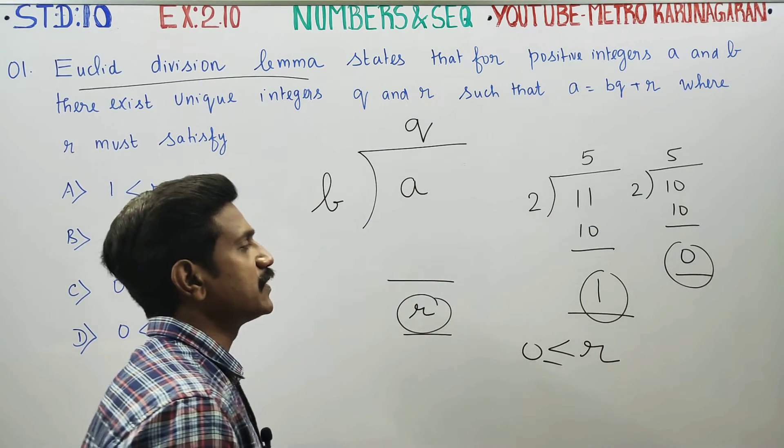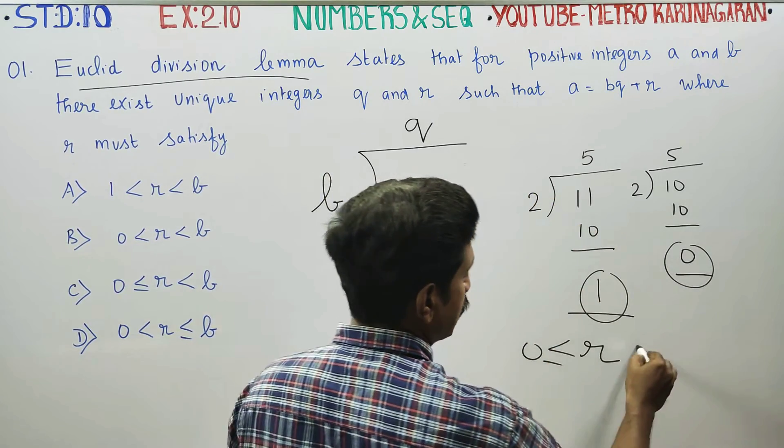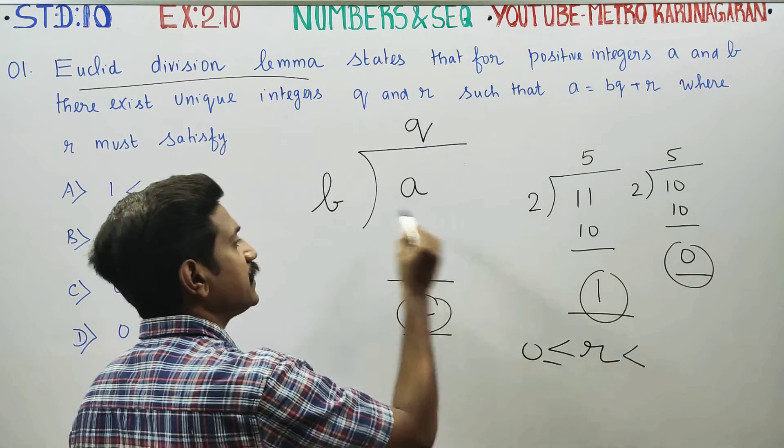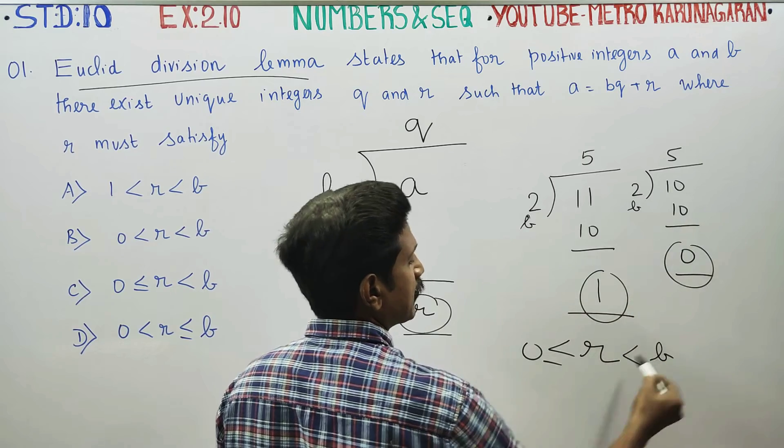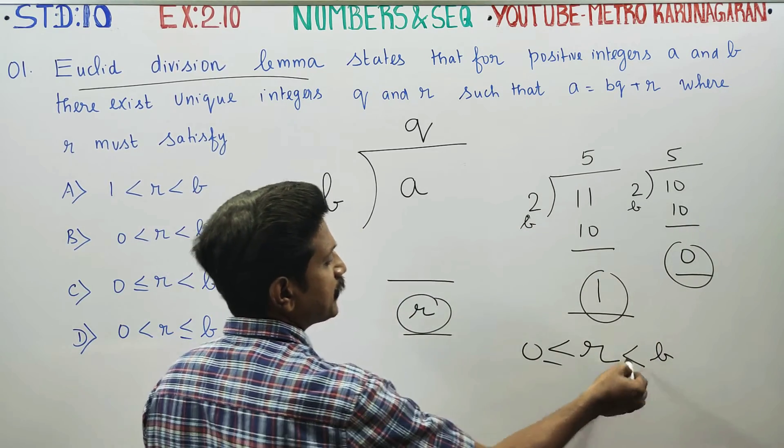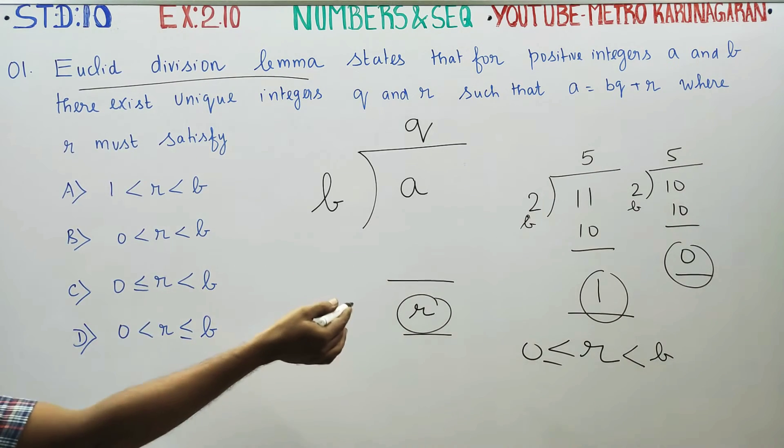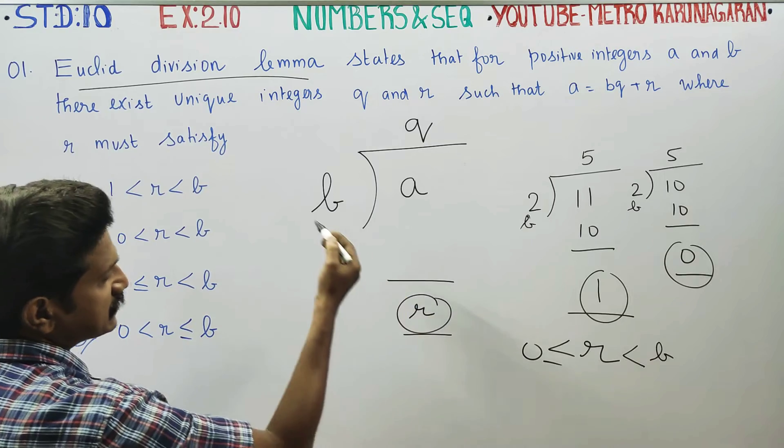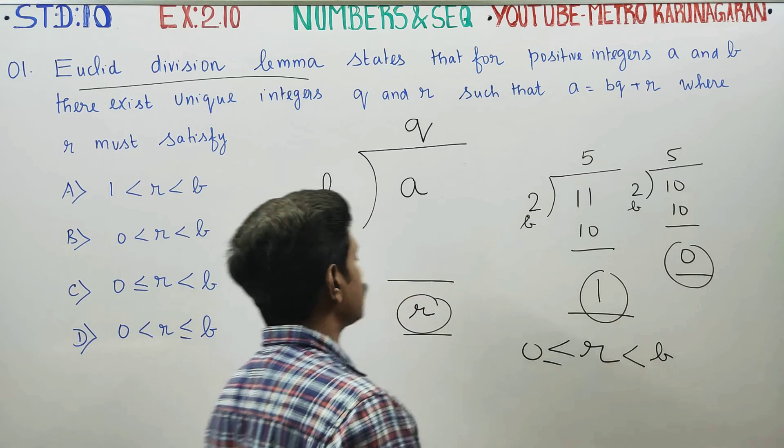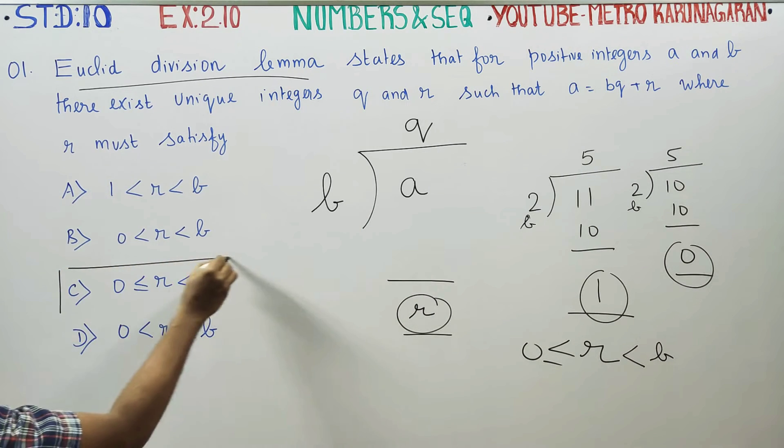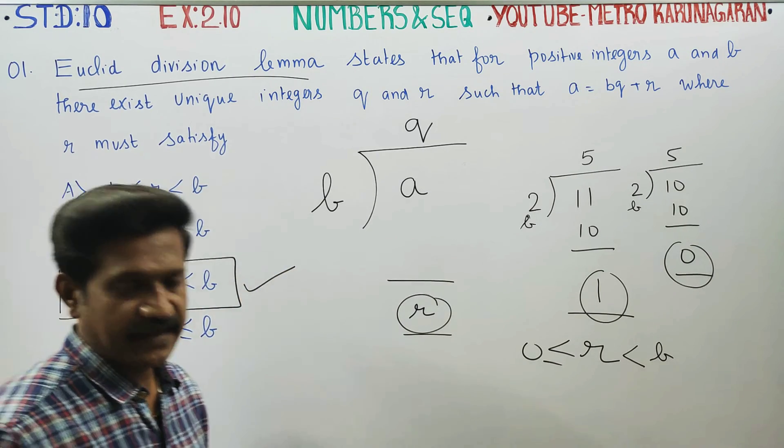The remainder is equal to R, and the divisor is B. The remainder can equal 0, or it will be less than B. If you look at this, you have the C option. Therefore, your answer will be 0 less than or equal to R less than B is your exact answer.